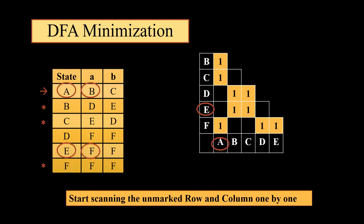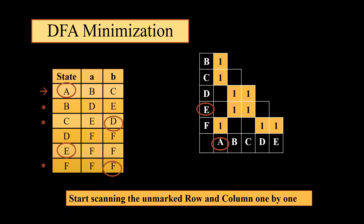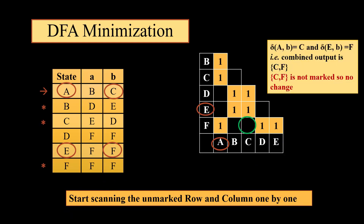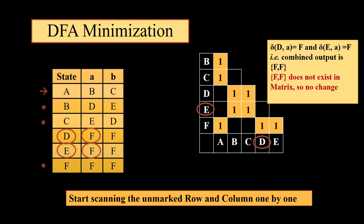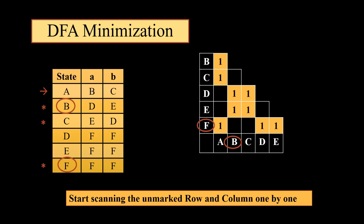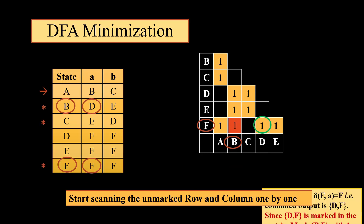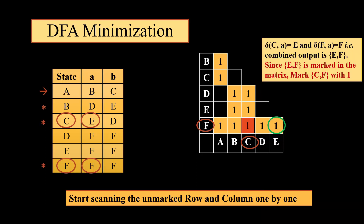Next we move to AE. AE on A gives us BF; BF is unmarked, so no change. AE on B gives us CF; CF is again unmarked, so no change. Next we move to DE. DE on A gives us FF, which does not exist in the matrix — no change. DE on B also gives us FF, which does not exist in the matrix — no change. Next we move to BF. BF on A gives us DF, which is marked, so we will mark BF. Next we move to FC. FC on A gives us EF; EF is marked, so FC will also be marked. We have completed the first iteration.